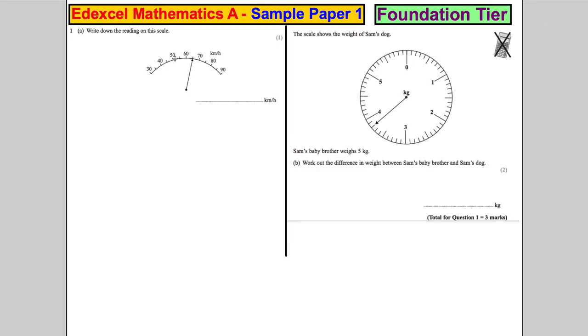And we have 30, 40, 50, 60, 70, 80, 90. And we've got one division in between each. So each of these must be five.